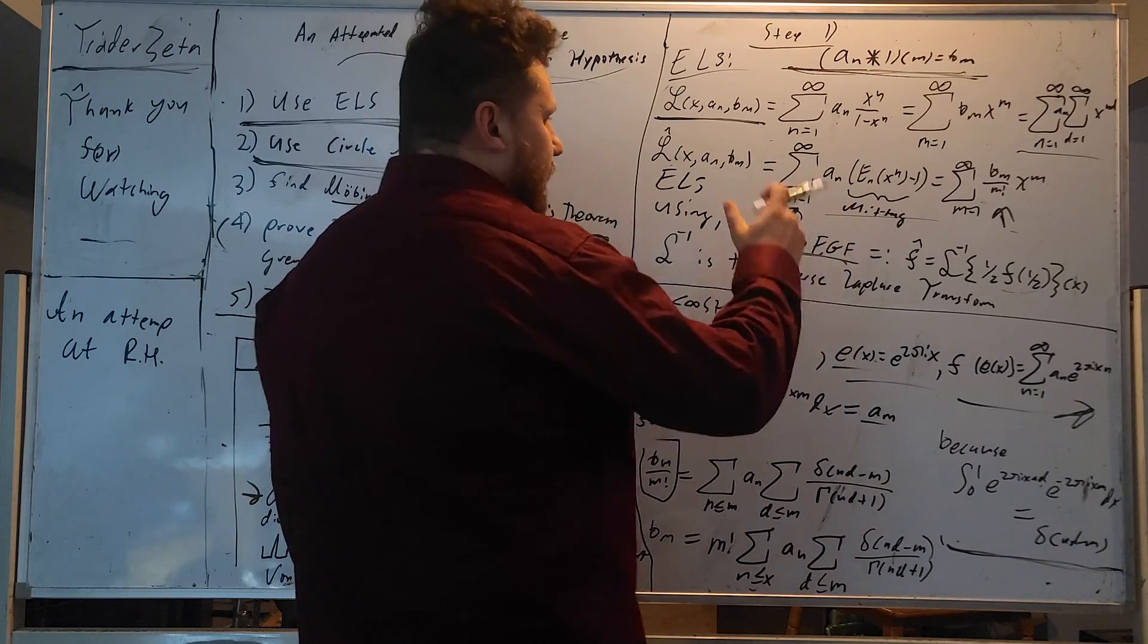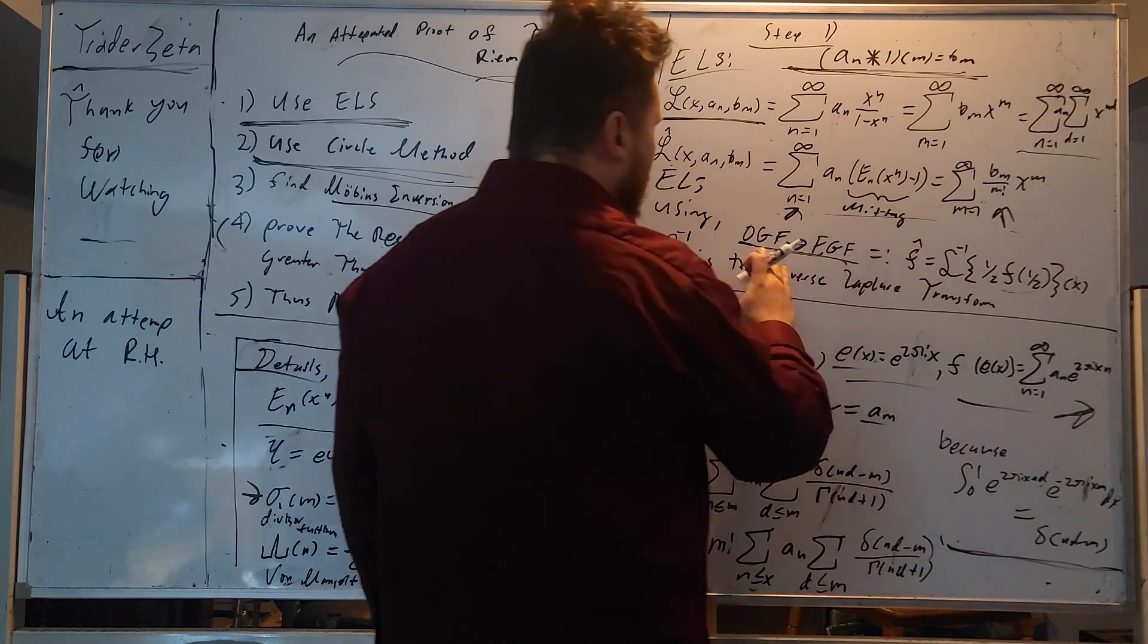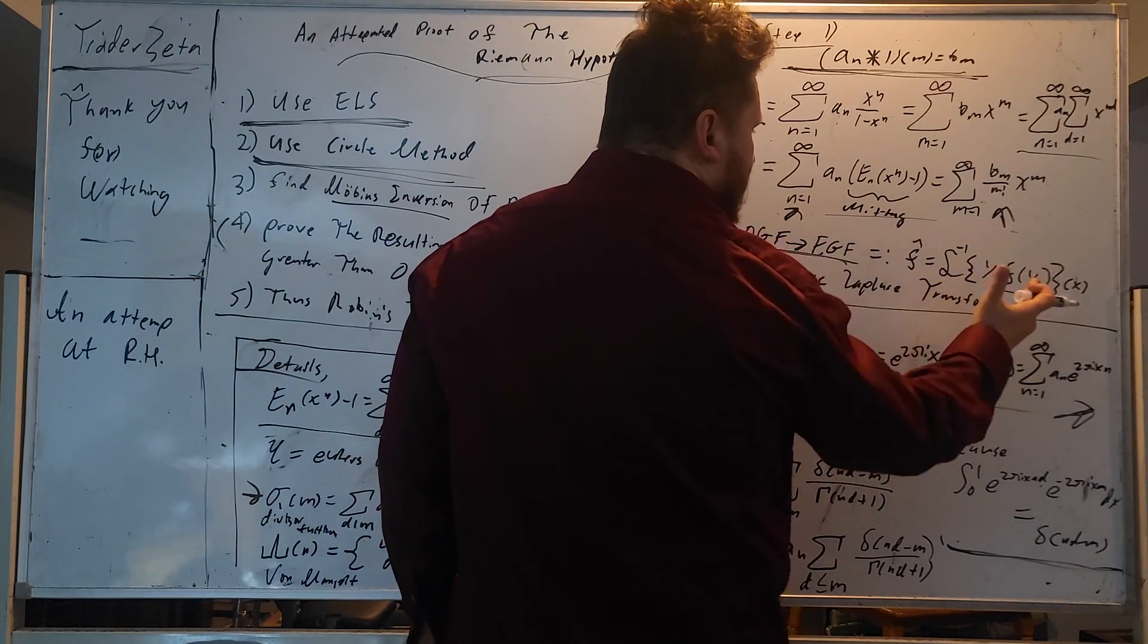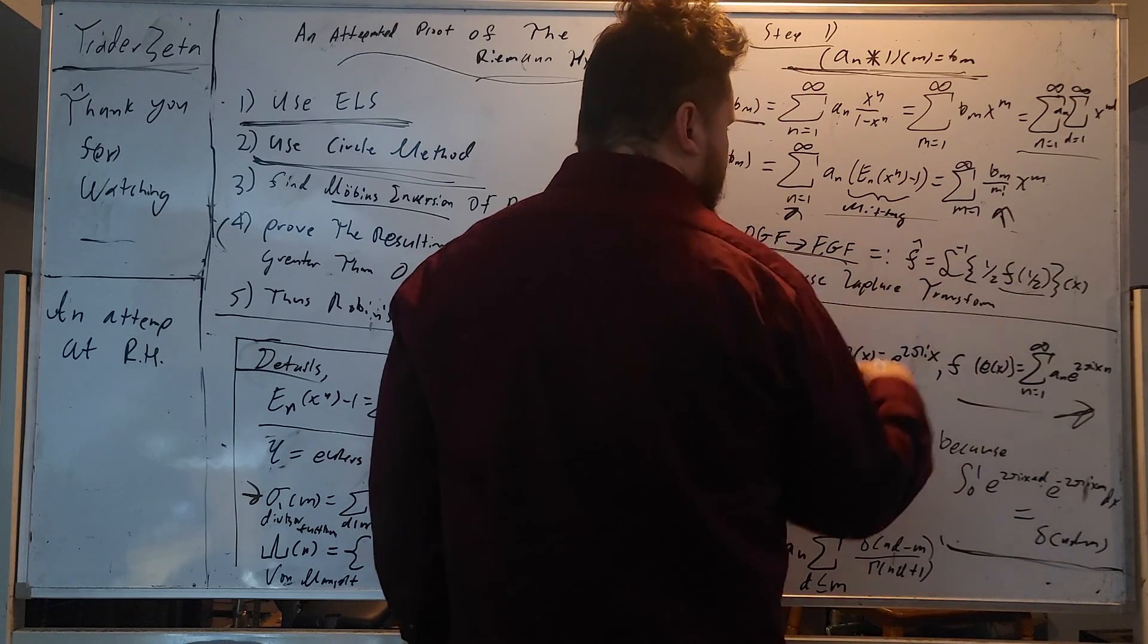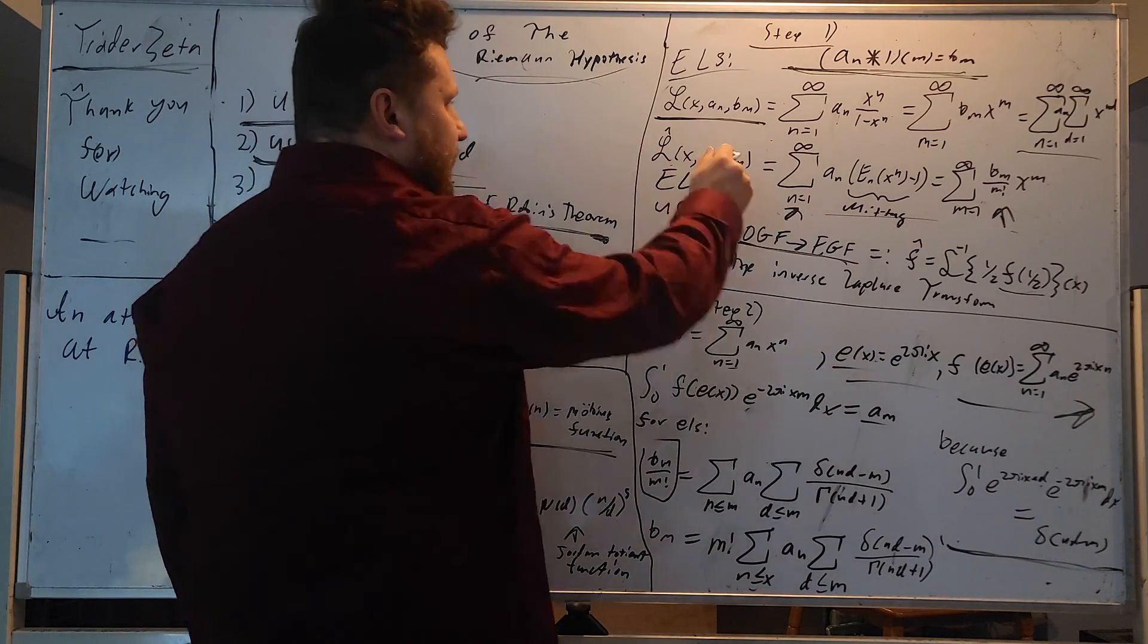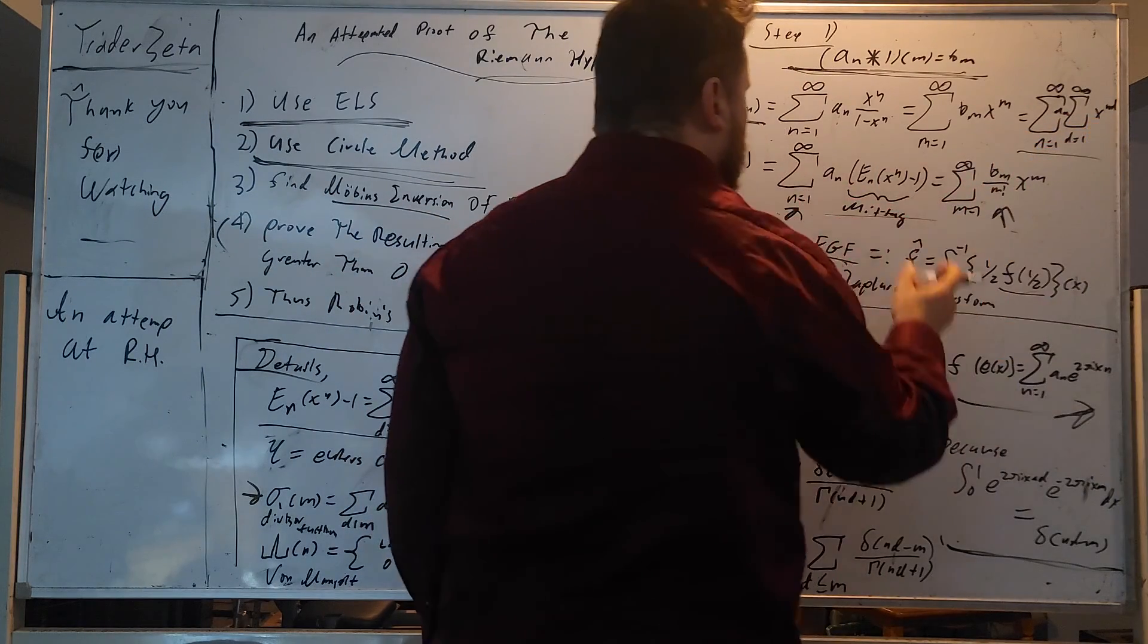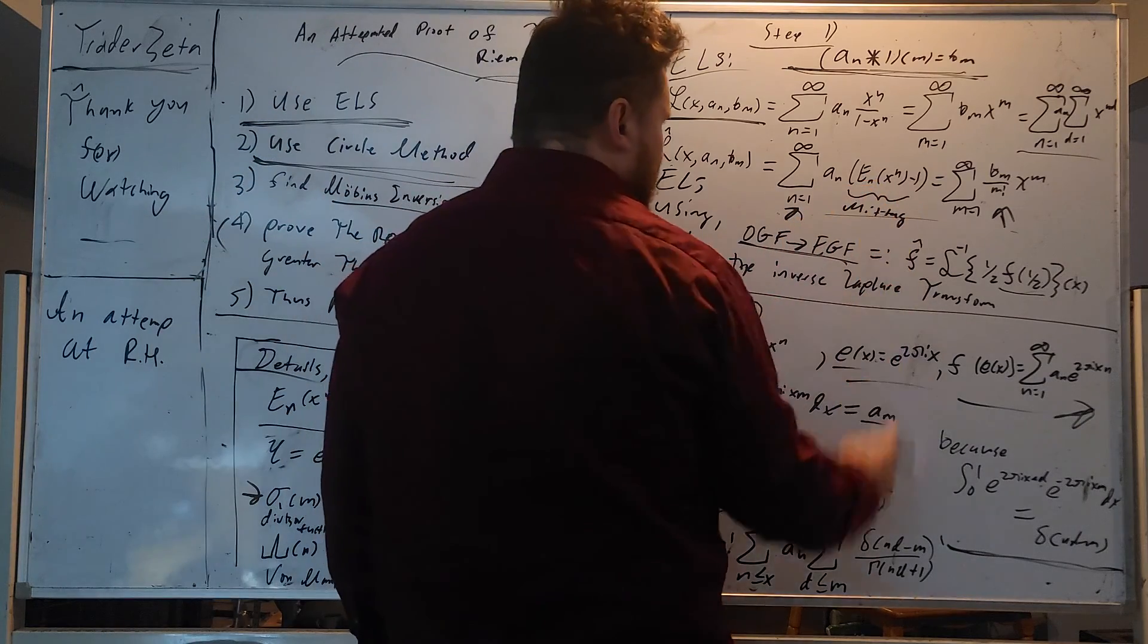Now, classically, in number theory, people deal a lot with generating functions. This is the OGF, ordinary generating function. But there is another style called EGF, exponential generating function. So what we're going to do is take our Lambert series, and use our OGF to EGF transformation.